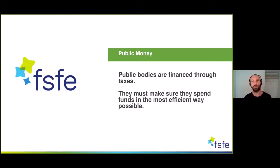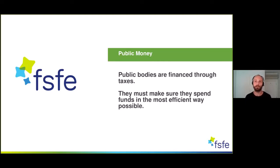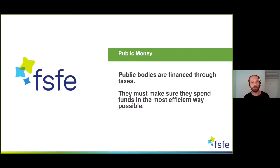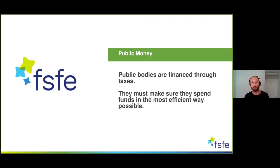Especially when it comes to public bodies, there's also the issue of money. Public bodies are financed through taxes — taxpayers' money, our money. That's why public bodies must spend funds in the most efficient way possible. Free software can help here, as public bodies have more or less similar demands all over the world — they can share software and don't have to pay for licenses. If they collaborate and use free software, they could save a lot of money. That's why they need free software in order to spend their funds efficiently.